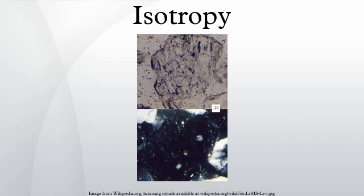The Big Bang theory of the evolution of the observable universe assumes that space is isotropic. It also assumes that space is homogeneous. These two assumptions together are known as the cosmological principle. As of 2006, the observations suggest that on distant scales much larger than galaxies, galaxy clusters are great features, but small compared to so-called multiverse scenarios.